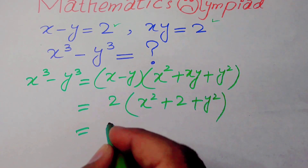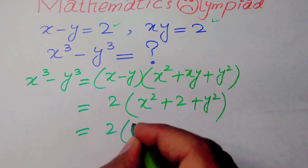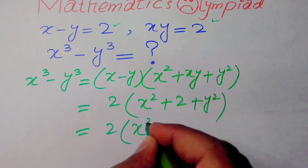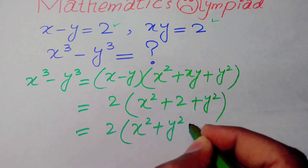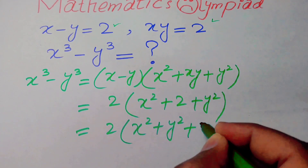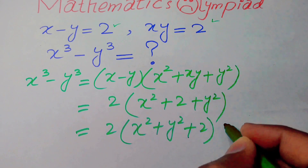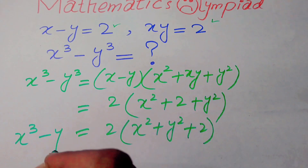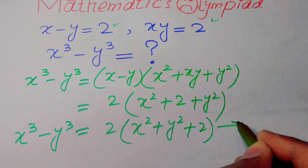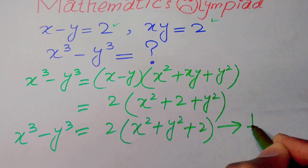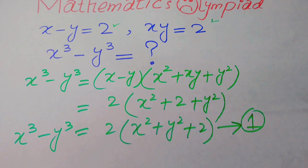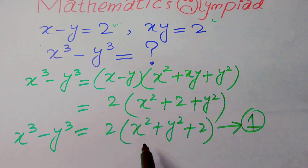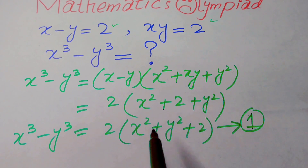After that we simplify this term and obtain 2 times of x squared plus y squared plus 2. I will name this as equation number one.